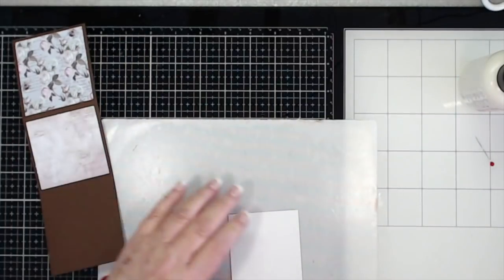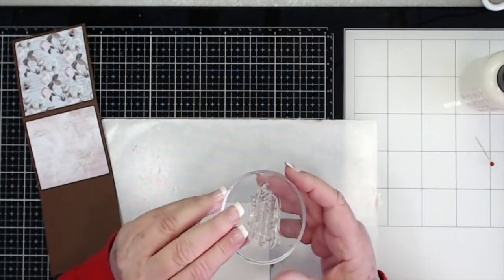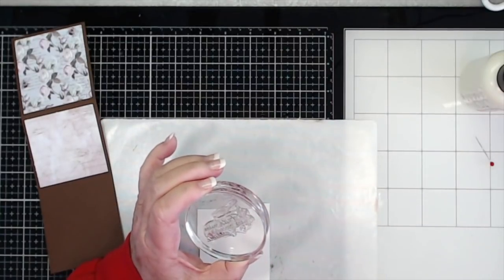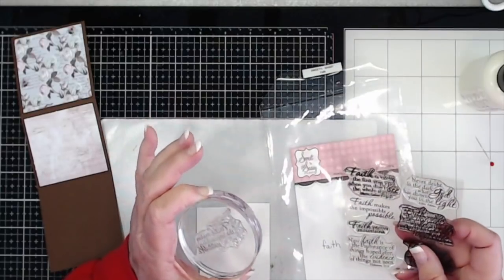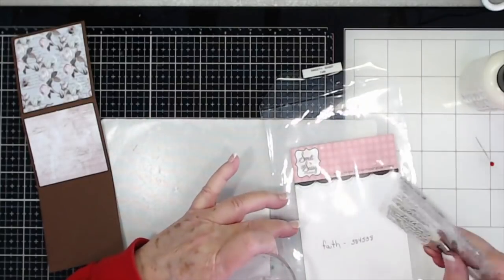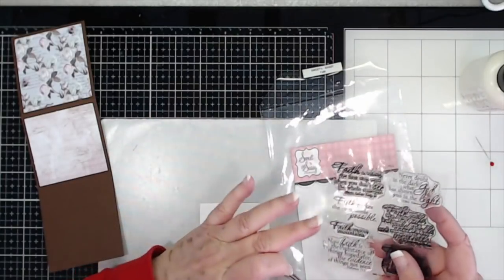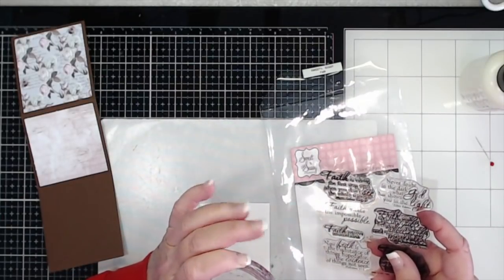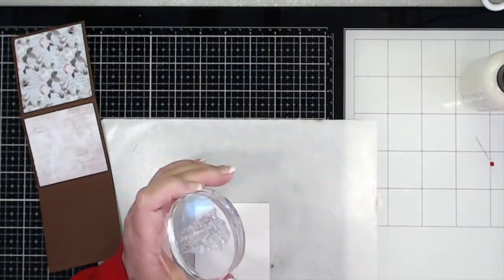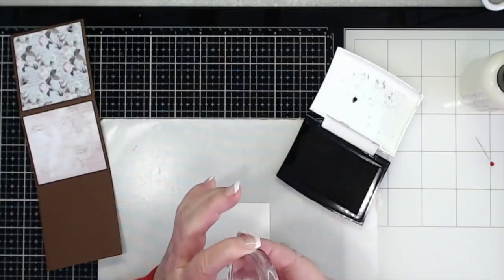All right, and then I have just a white piece of cardstock that we're going to put down here at the bottom, but first I'm going to stamp on it. And I'm going to use a stamp that I have had for a while. Now you can use the meme stamps that come in our March kit if you want to. This one is a Sweet and Sassy and what I'm stamping says 'faith makes the impossible possible.'